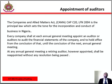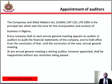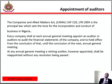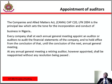Appointment of auditors: Section 357 of the Companies and Allied Matters Act (CAMA) 2004 provides for the appointment of auditors. This section states: every company shall at each general meeting appoint an auditor or auditors to audit the financial statements of the company, and to hold office from the conclusion of that meeting until the conclusion of the next annual general meeting. At any annual general meeting, a retiring auditor shall be reappointed without any resolution being passed unless they are not qualified for appointment, or a resolution has been passed appointing some other person, or providing expressly that they shall not be reappointed, or they have given notice of their unwillingness to be reappointed.